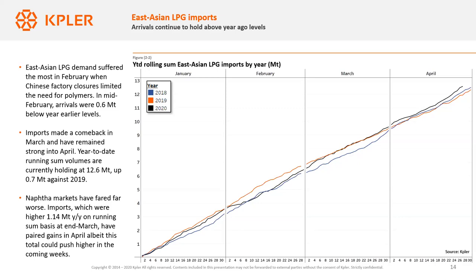So it's possible that LPG arrivals could start to weaken again moving ahead. Also, one more note on naphtha arrivals — they have been quite weak so far through April, but we could see a tick higher as we get more clarity on the product volumes that have yet to be tracked.